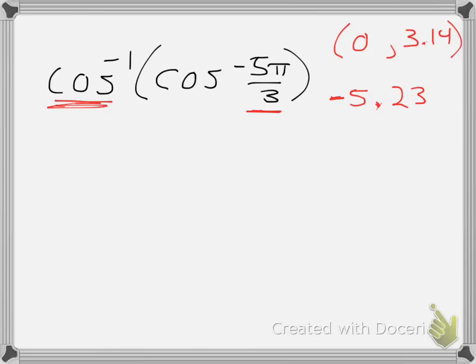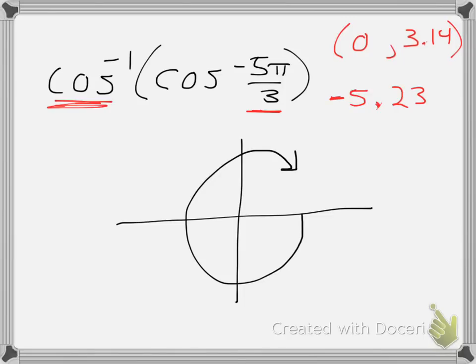So if I consider my graph, since it's negative 5π over 3, let's see what that actually puts us. Negative means I go clockwise, so I'm actually going to go this way. It puts me right here, so this is negative 5π over 3.